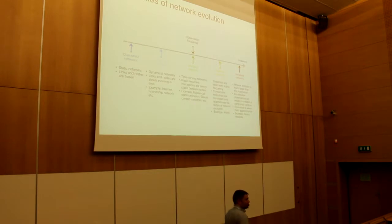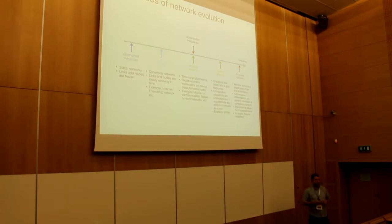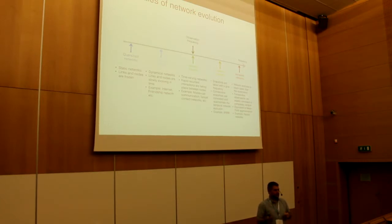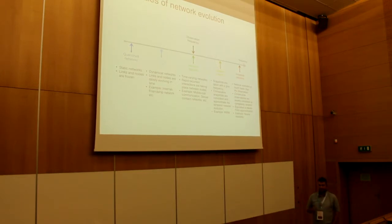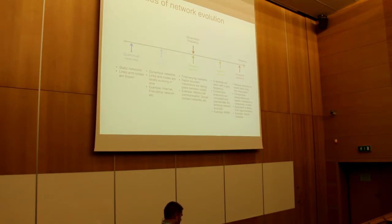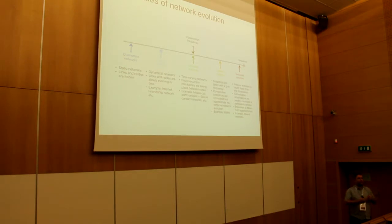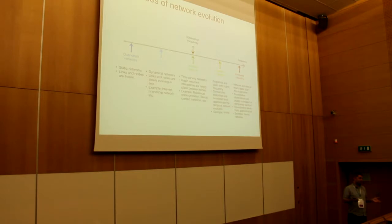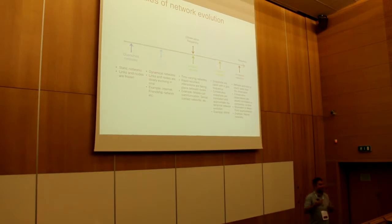In temporal networks, we consider not only the creation of links but recurrent interactions between agents. For example, if I call my brother five times, the existence of the social tie is there, but in this representation I consider each call separately. The best examples are mobile phone communication, or the sexual contact network — there are temporal sexual contact networks, including one collected in Brazil through an online prostitution website. There you can see how recurrent interactions drive the spread of sexually transmitted disease.